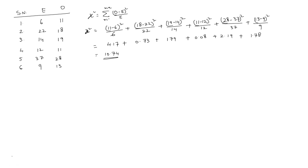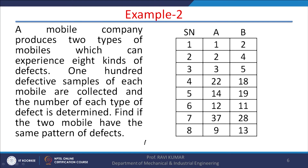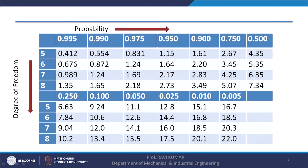The chi-square value is 10.74 and the degree of freedom: n = 6 categories, so f = 6 − 1 = 5. For degree of freedom 5 and chi-square value 10.74, we look at the table.